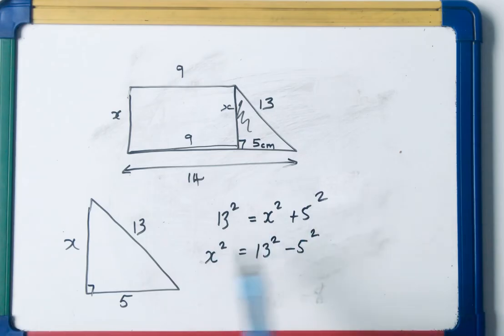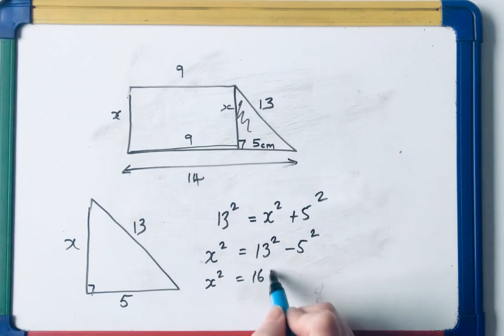Have a look at the video on rearranging and solving equations, if you're not sure what's going on here. But x squared is 169 minus 25, so x squared is 144.